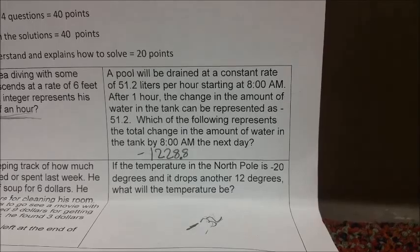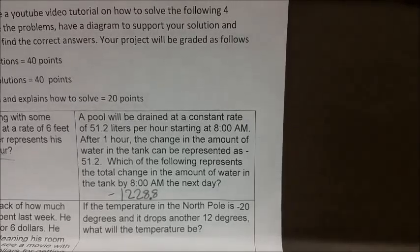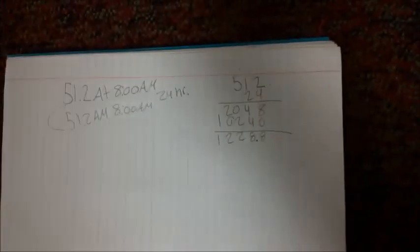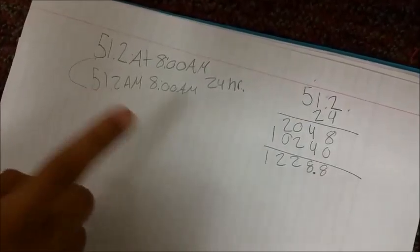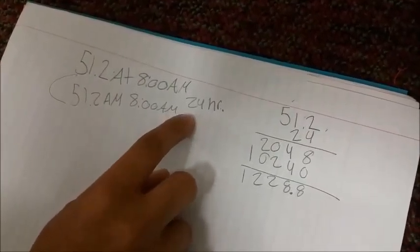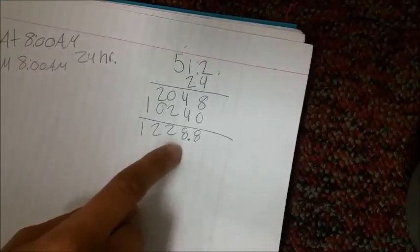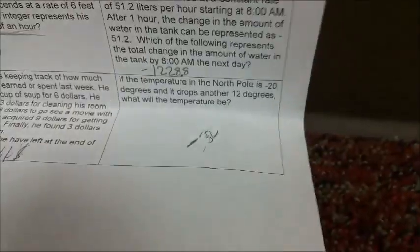Which of the following represents the total change in the amount of water in the tank by 8 a.m. the next day? Okay, right here we have: it started at 51.2 at 8 a.m. the first day, and the second day the same amount. So you would have to multiply 51.2 times 24, and that gives you 1228.8. That's your answer.